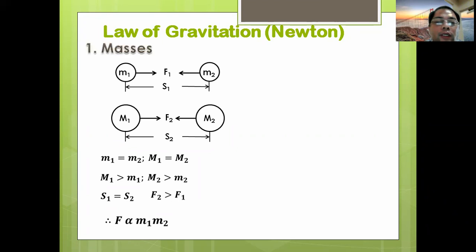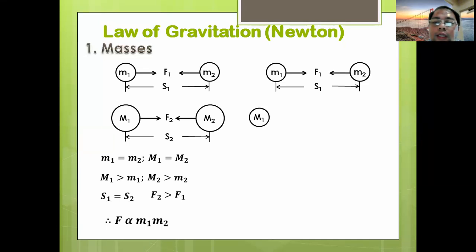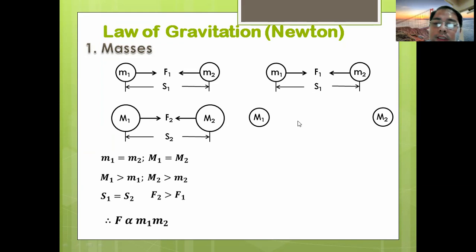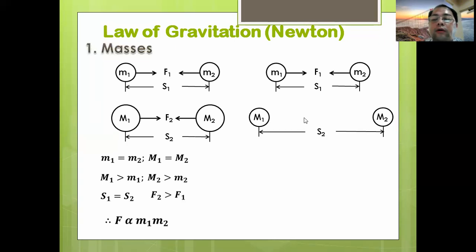The first factor is mass. The next factor is: what if we try to adjust the distance of the masses? We try to pull them away from each other. For the first illustration we keep the distance the same but change the mass — bigger masses, same distance. Now what if we have different distances but the same masses? If we increase the distance between two objects, S2 is farther compared to S1.